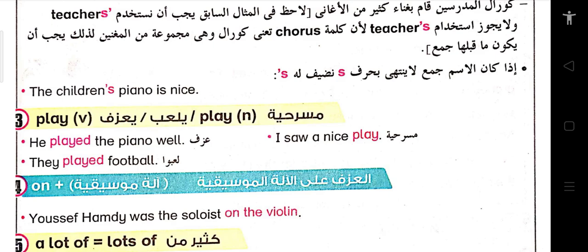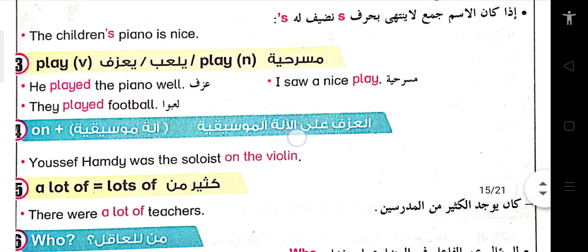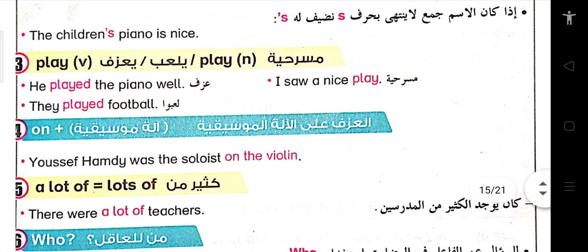كلمة A lot of بتساوي lots of، ودي بتيجي مع الـ countable والـ uncountable nouns الاتنين. Let's have an example: There were a lot of teachers.